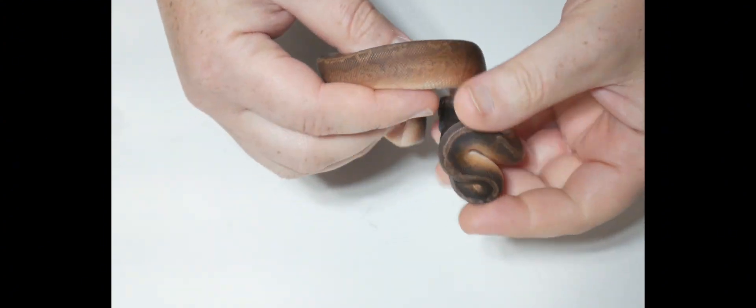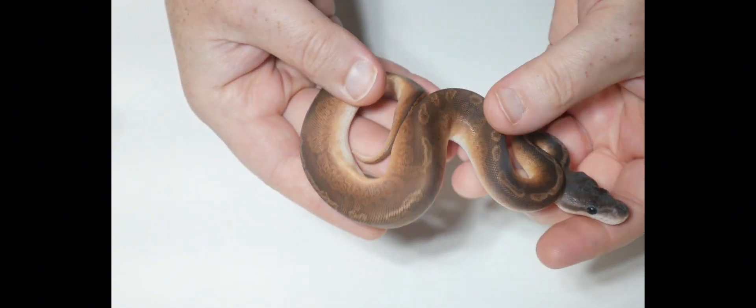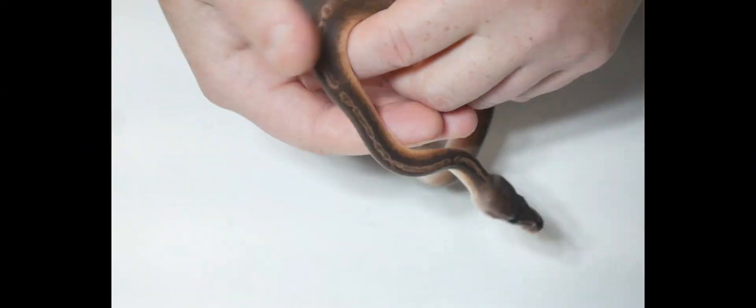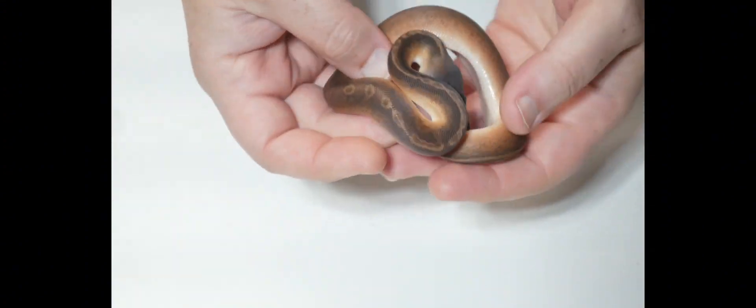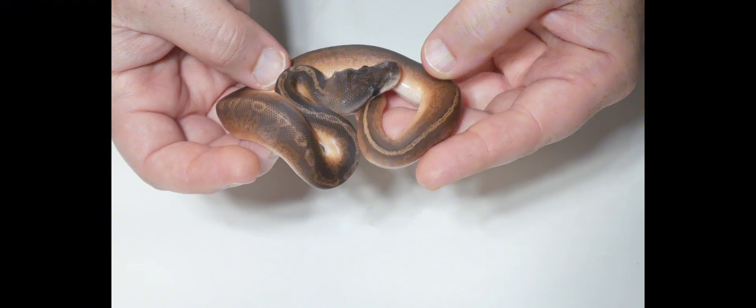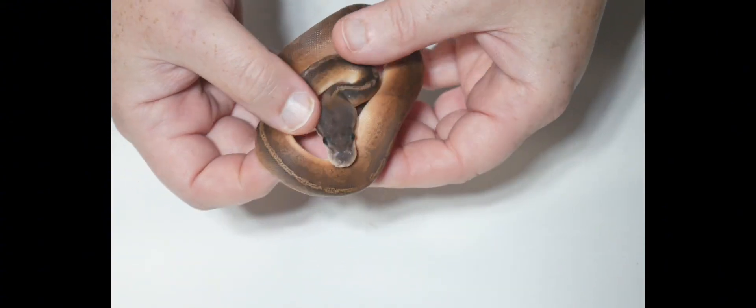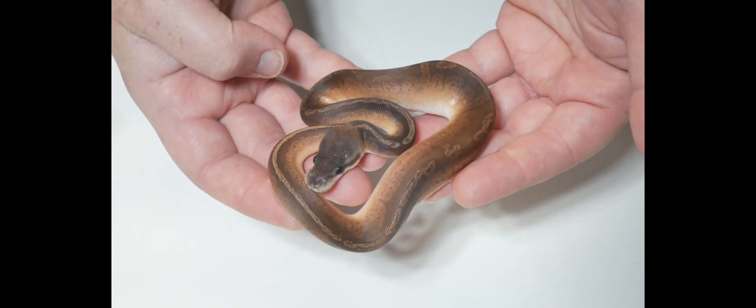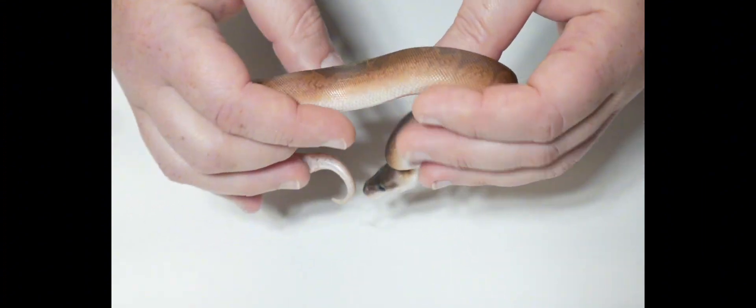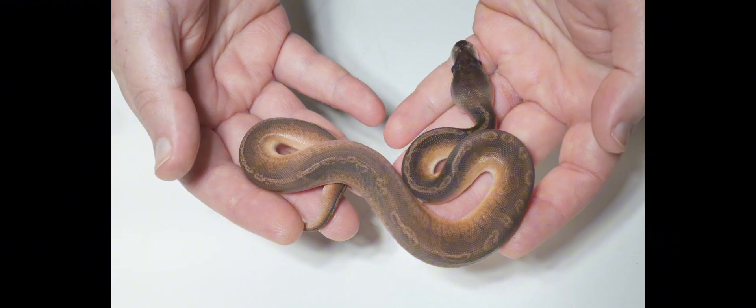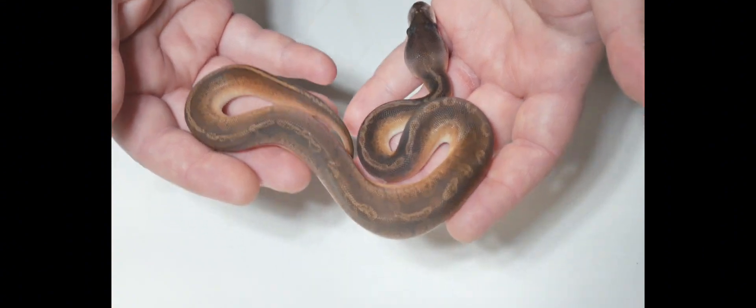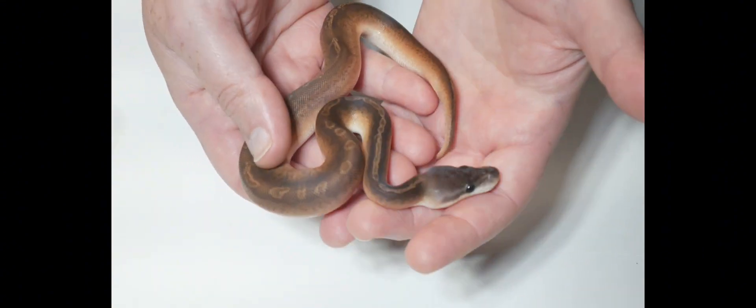This is a male and it is a Cinnamon Sunset. Absolutely amazing looking animal. I don't think there's any lesser in this. There's definitely not Pastel or Coral Glow. I would expect if there was lesser obviously it would have a little bit different color and I think the pattern would be a little bit different. So Cinnamon Sunset Male. This is not staying. Male Cinnamon Sunset, it's available.